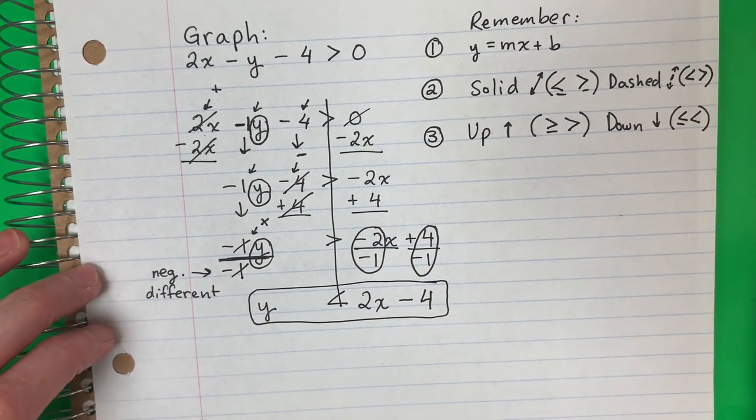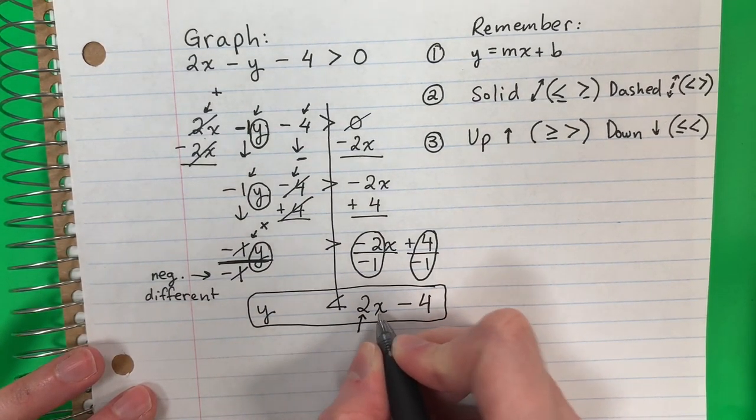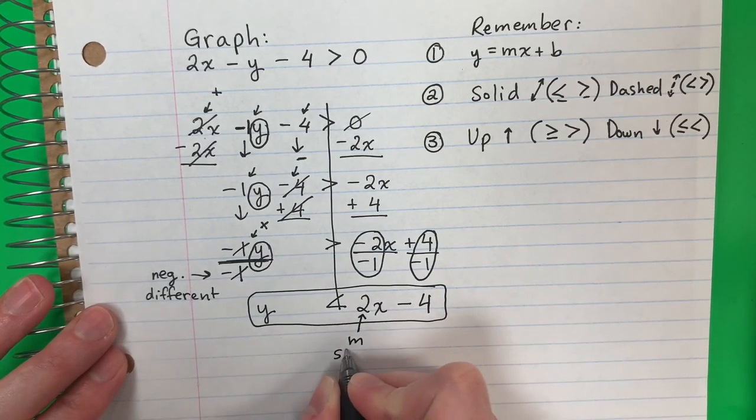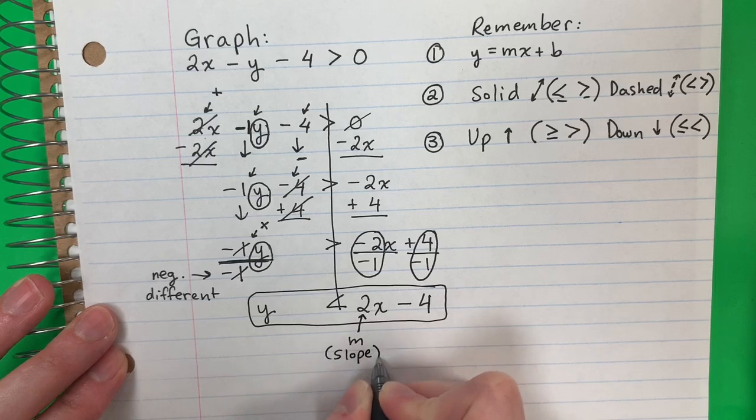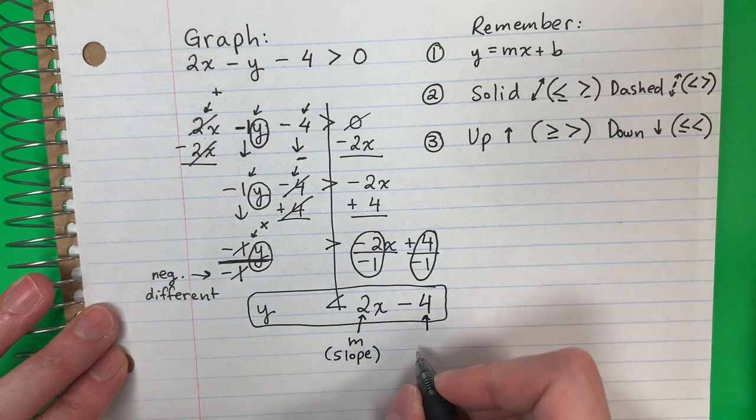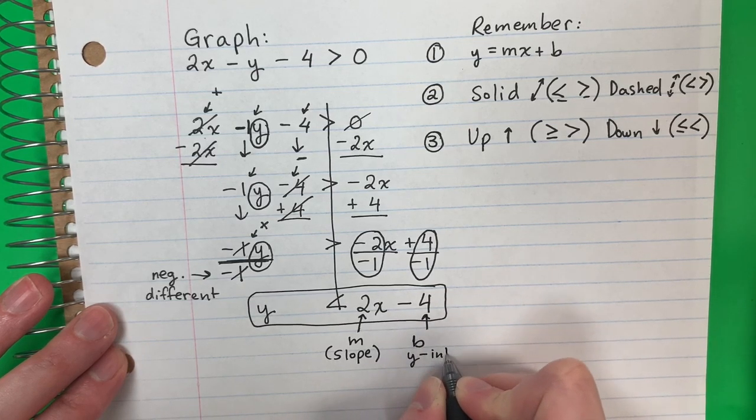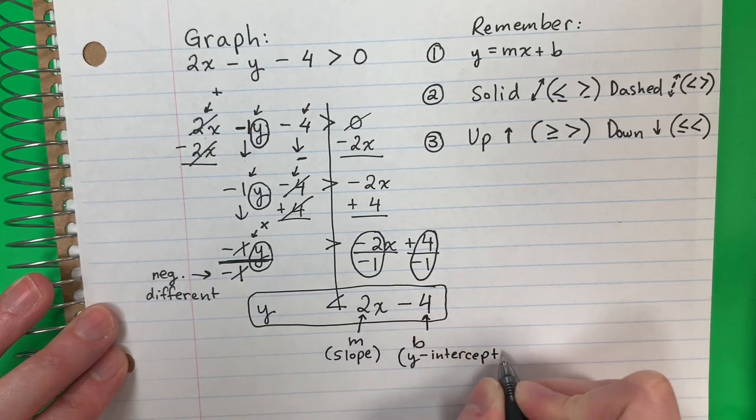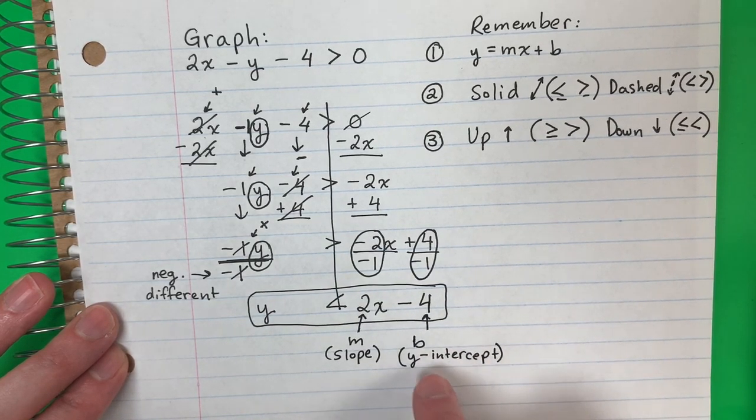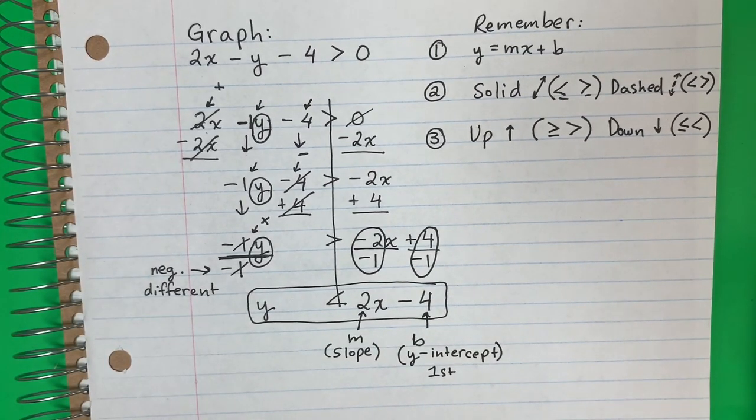Now we can graph. Ahora podemos hacer una gráfica. So this number with the x, este número con el x is the m, es el m. Slope. And this number without the x, y este número sin x, is the y intercept b, es b y intercept. And remember you do this one first. Vamos a poner este primero. The y intercept is first. Primero. On my graph. En mi gráfica.